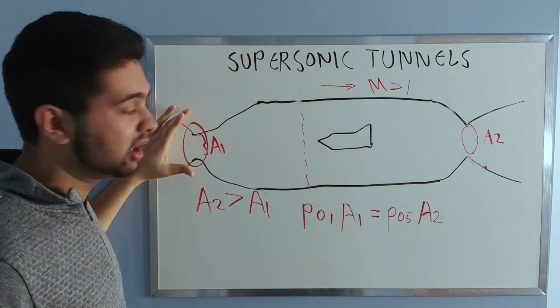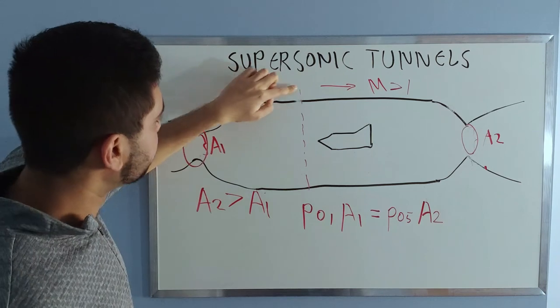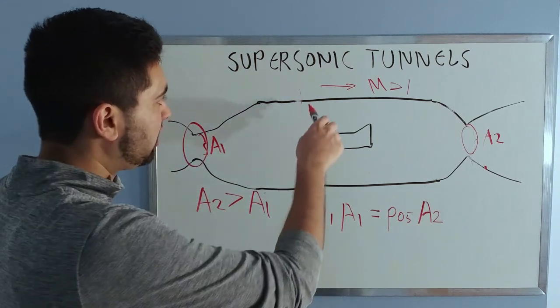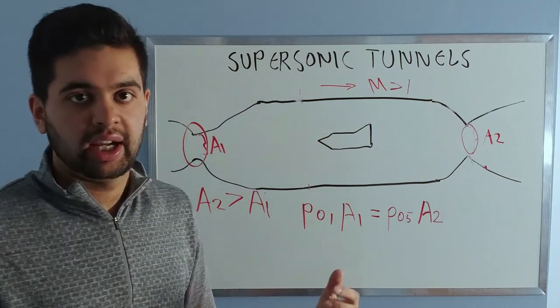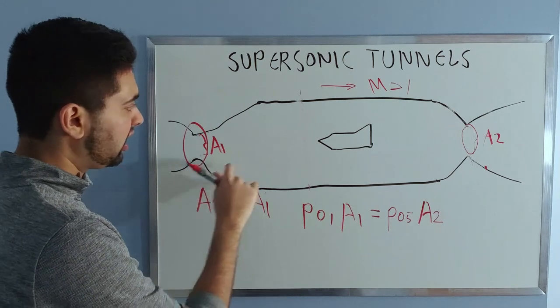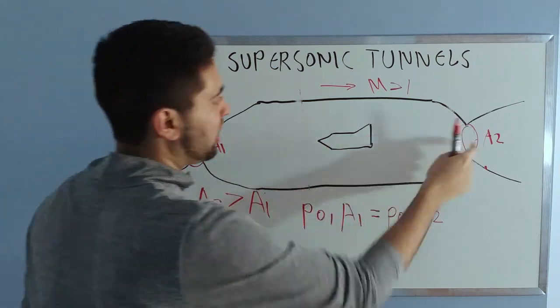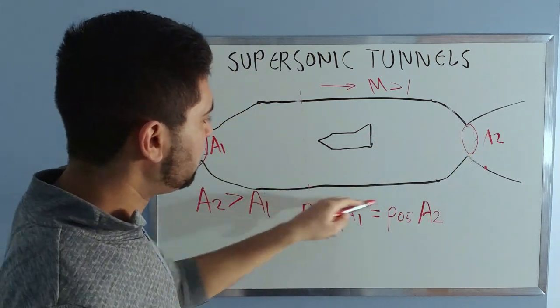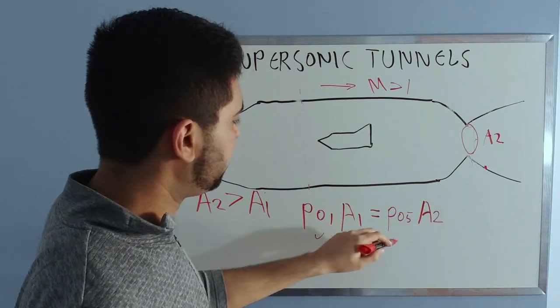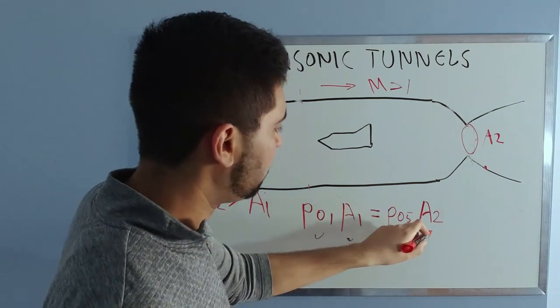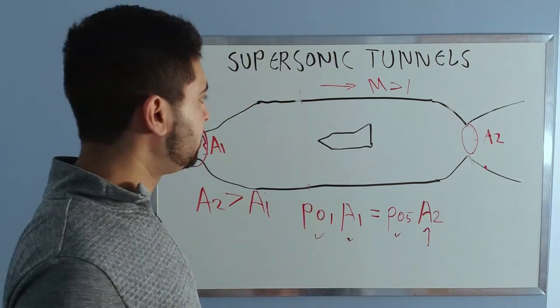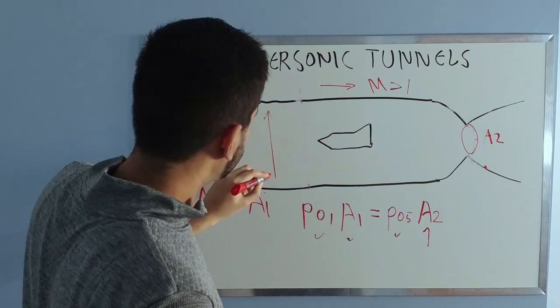What they use for that is they consider a normal shock here, which is the worst case scenario, and then they assume that your stagnation pressure here and here is the same as well as there and there. You can use this relation here to figure that out. You know what this is, you know what this is, and then you can figure out this ratio here and then your A2 from there. The next very important consideration is this height, let's call it h.